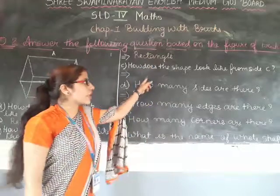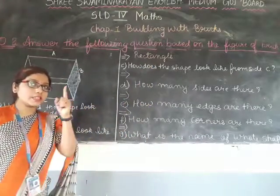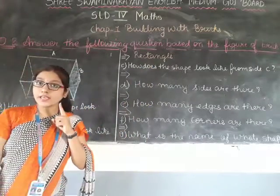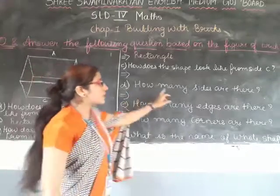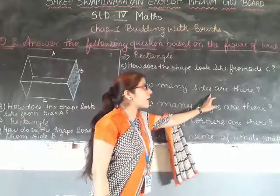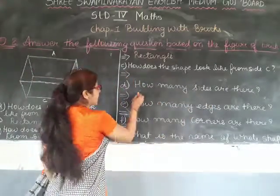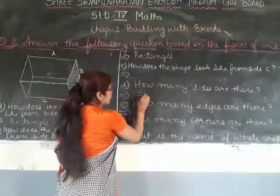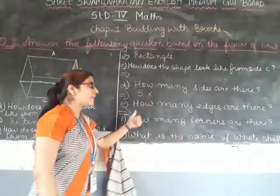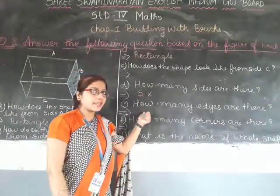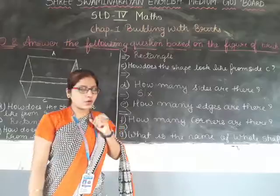How does the shape look like from C? This you will write back yourself. How many sides are there? Six. How many edges are there? This you will write by yourself.